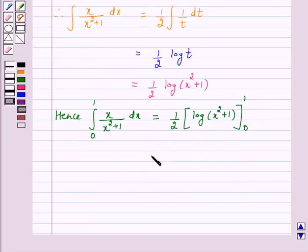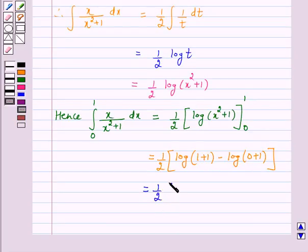So, this is equal to 1 by 2 log of... Now, upper limit is 1. So, 1 plus 1 minus log, lower limit is 0. 0 plus 1. And this is equal to 1 by 2 log 2 minus log 1.